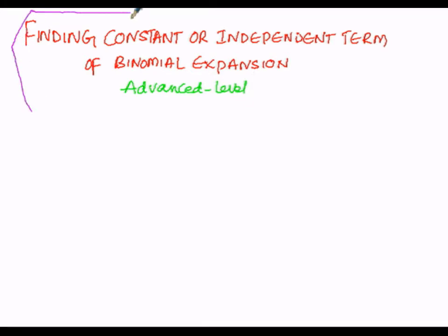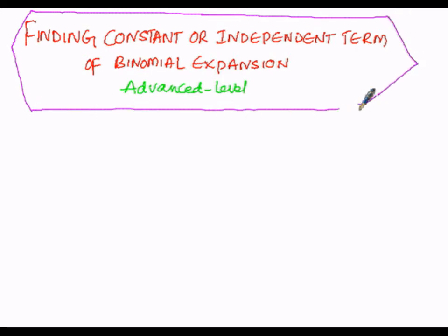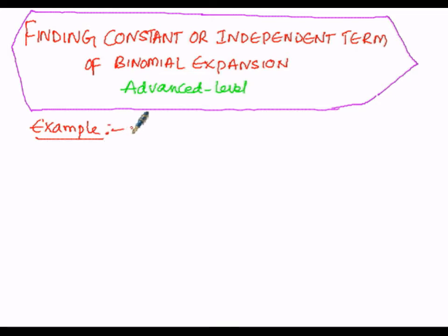The general term of a binomial expansion is given by T(r+1) = nCr · x^(n−r) · y^r. We will use this to perform an illustration in finding the constant term of a binomial expansion.